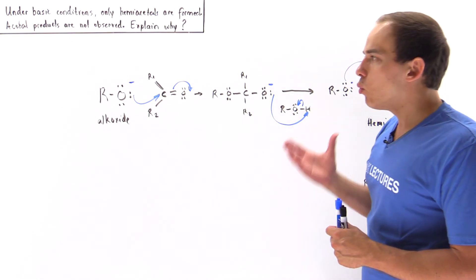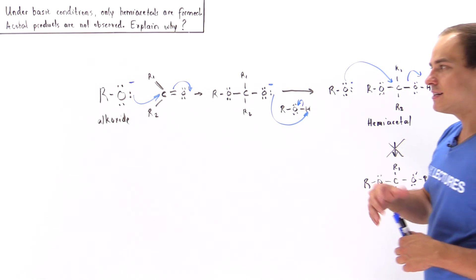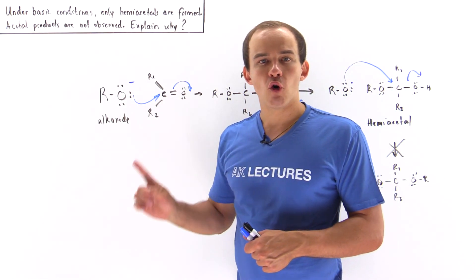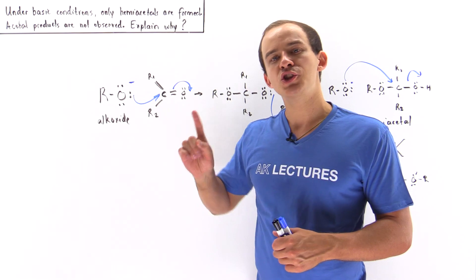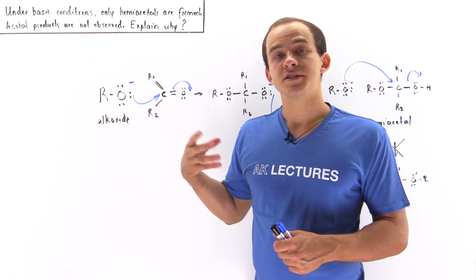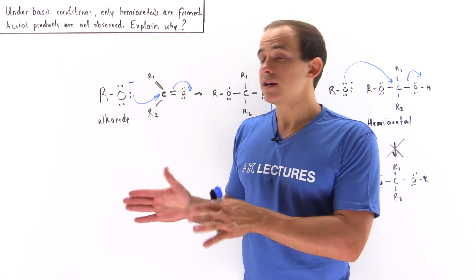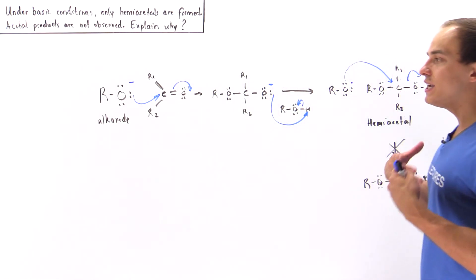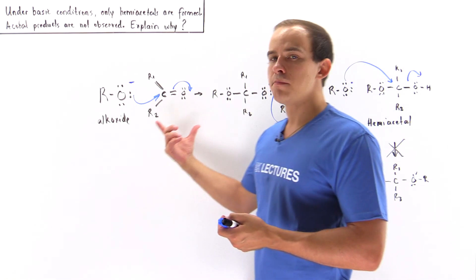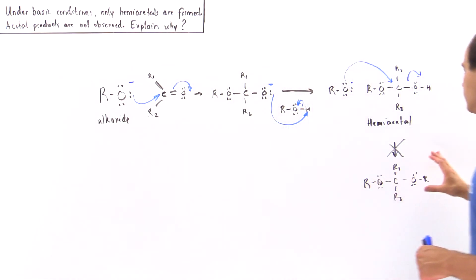So once again, under basic conditions, we only form the hemiacetal and we do not form the acetal. But under acidic conditions, as discussed in the previous lecture, we can actually begin with our carbonyl molecule and we can go all the way to our acetal, where this is our acetal compound.